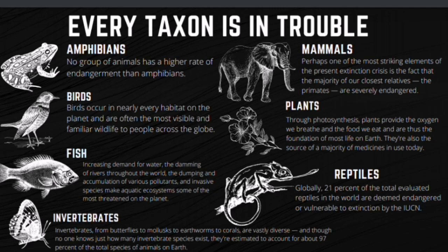Invertebrates — from butterflies to mollusks to earthworms to corals — are vastly diverse and account for about 97 percent of the total species of animals on Earth. Of the 1.3 million known invertebrate species, it is evaluated that 9,526 species — about 30 percent of those evaluated — are at risk of extinction. Freshwater invertebrates are severely threatened by water pollution, groundwater withdrawal, and water diversions, while many invertebrates of notable scientific significance have become endangered or extinct due to deforestation and the rapid destruction of tropical rainforests.